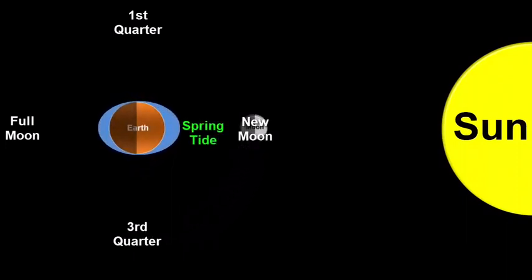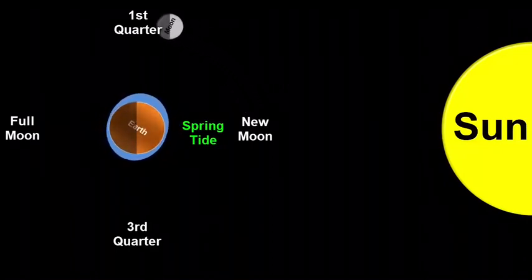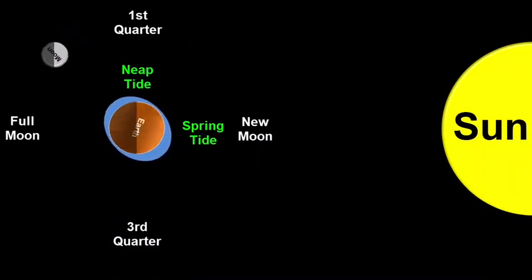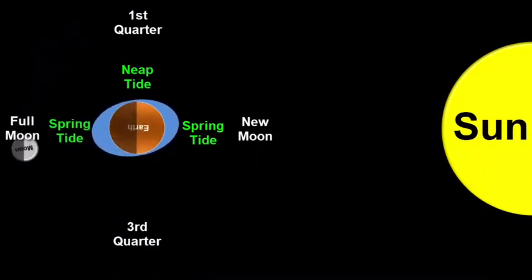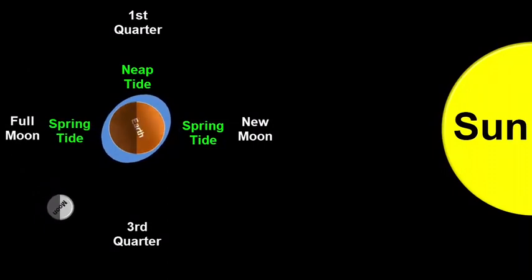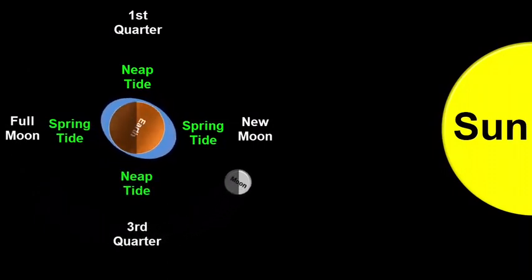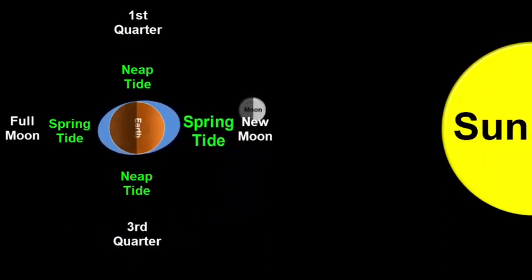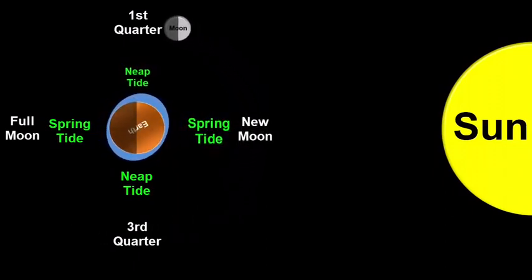Now when you consider the combined effect of the moon's gravity, sun's gravity, and earth's rotation, we get two spring tides and two neap tides in a lunar cycle.